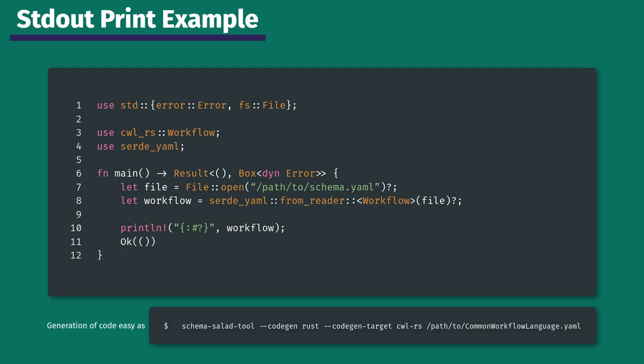This is an example of an application that prints the fields of the Workflow structure we saw earlier. The actual deserialization is done at line 8, using the Serde YAML plugin, calling the from_reader function on the file opened above, and declaring Workflow as the type. If the deserialization is successful, the structure will be printed out. Generating the cwl.rs library declared on line 3 is as simple as for any other supported language: call the tool, specify the language and the output directory, and set the schema definition.